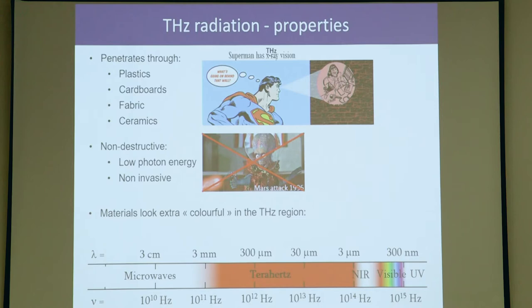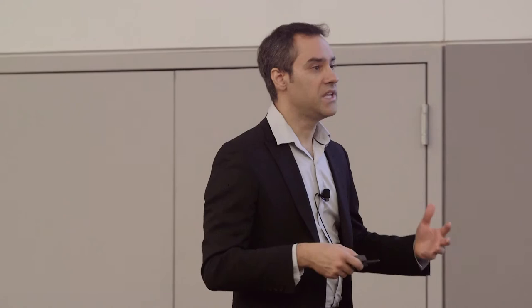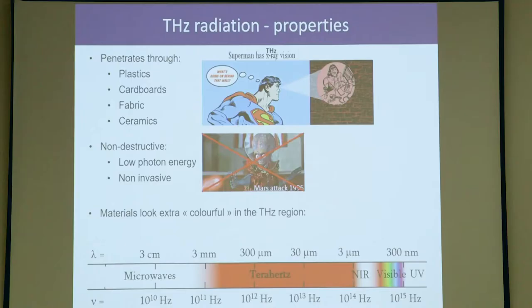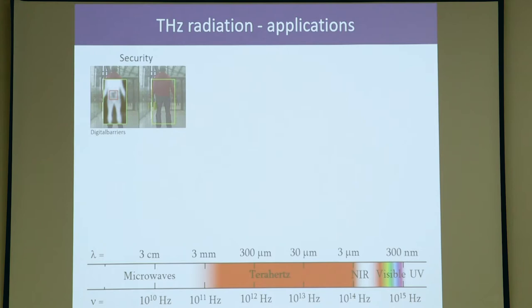In the terahertz region, we cover a lot of rotational and vibrational modes of molecules and materials. So if you could see in this region, the world would be even more colorful. This is a picture I took last weekend in Ottawa. This is already very colorful at this time of the year, but if you were able to see in the terahertz, you would be able to get even more colors. There's a lot of incentive bringing terahertz technologies into applications.